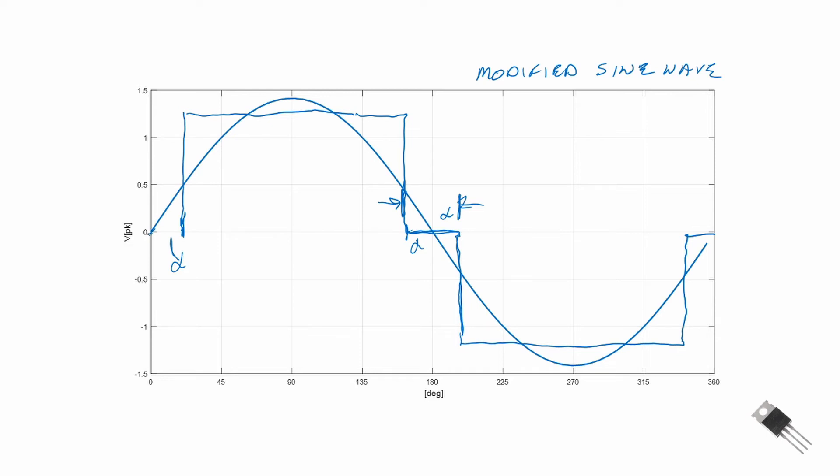The advantage to a modified sine wave is it has a total harmonic distortion that is lower than a full square wave. In a full square wave, our alpha is equal to zero degrees. Here I'm showing alpha approximately equal to about 23 degrees, and 22.5 is where we optimize the total harmonic distortion. However, we do have to increase our amplitude to normalize and obtain a normalized RMS voltage of 1.